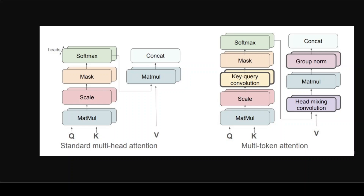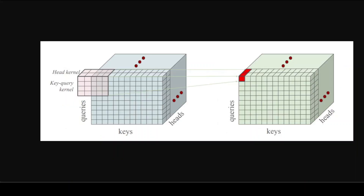This makes it possible for the model not just to find individual tokens — like 'ls' and 'rabbit' separately — but also to identify situations that require multiple relevant tokens to appear close together, locating exact positions more precisely. The architecture of MTA slightly modifies the conventional attention mechanism by introducing convolutional operations over three dimensions: queries, keys, and attention heads.